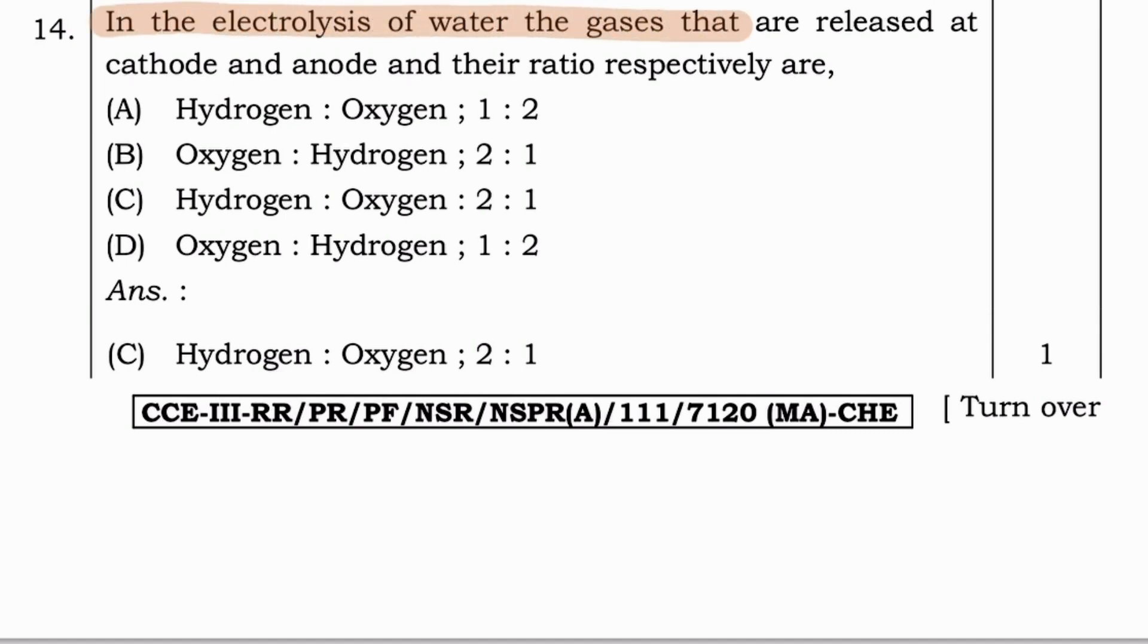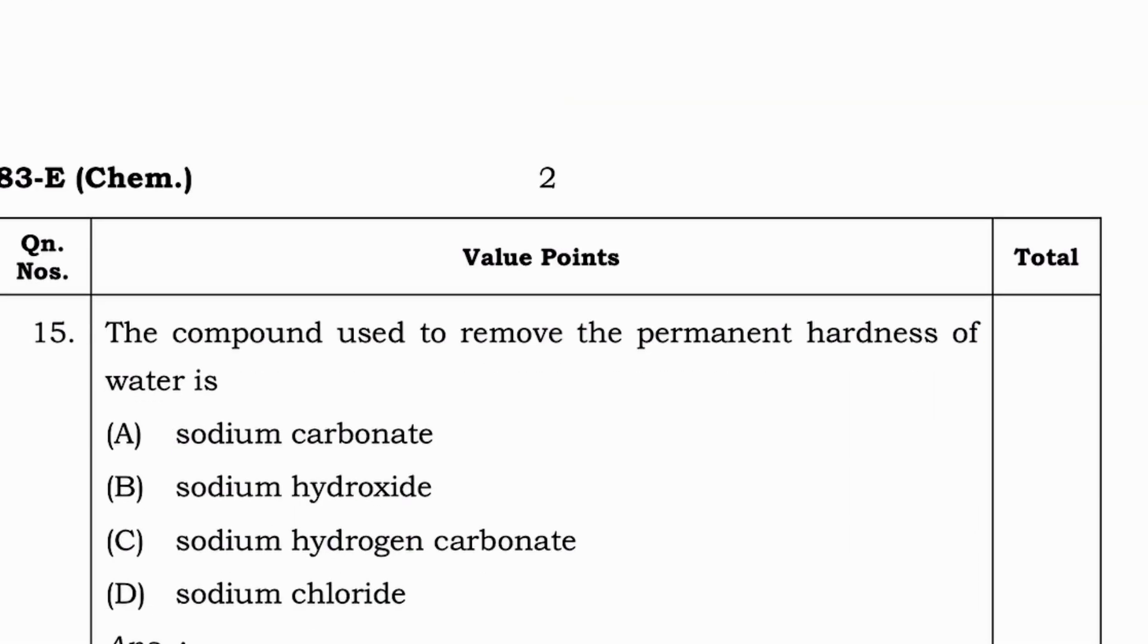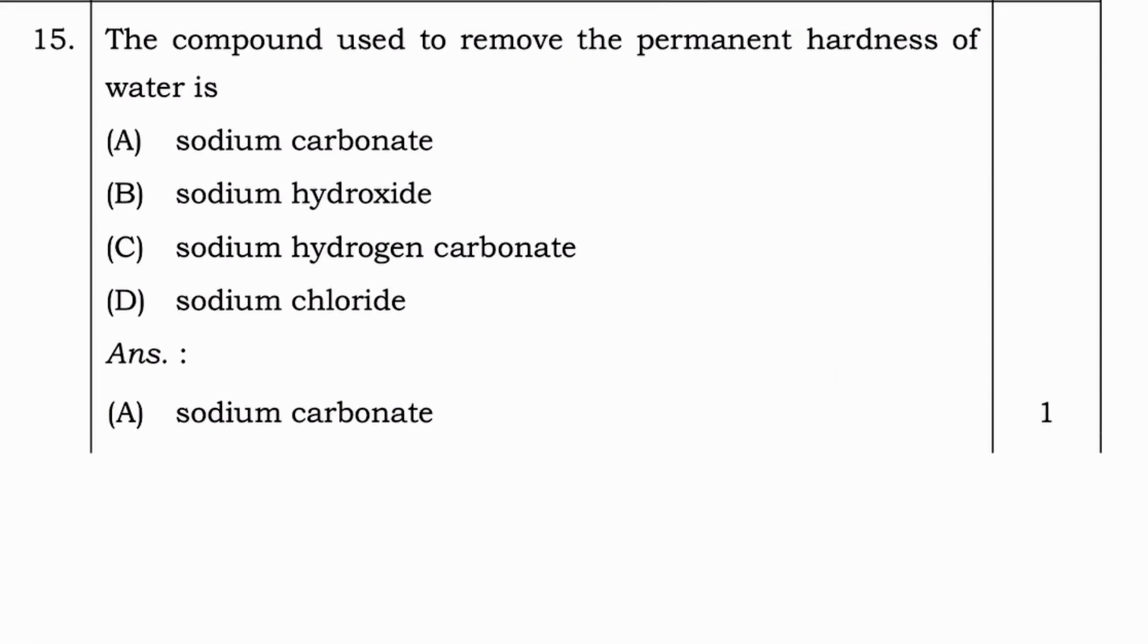Next question. In the electrolysis of water, the gases that are released at cathode and anode and their ratio respectively are? Options are hydrogen, oxygen, 1 is to 2, oxygen, hydrogen, 2 is to 1, hydrogen is to oxygen, 2 is to 1, and oxygen is to hydrogen, 1 is to 2. And answer is option C, hydrogen is to oxygen, which is 2 is to 1.